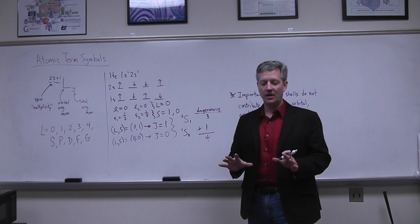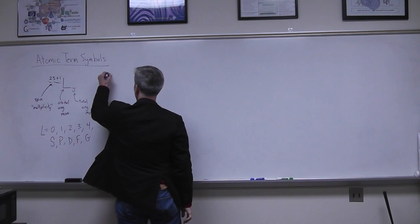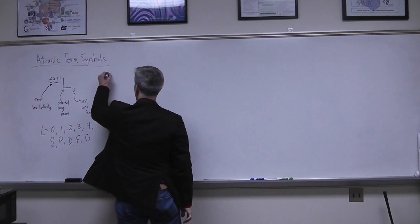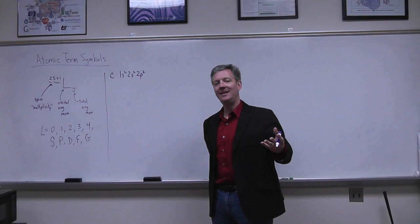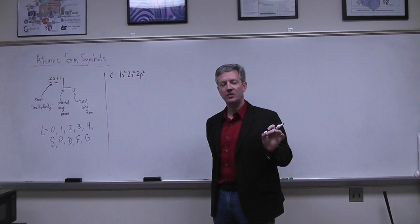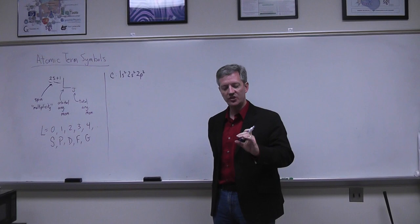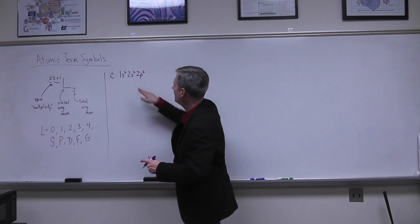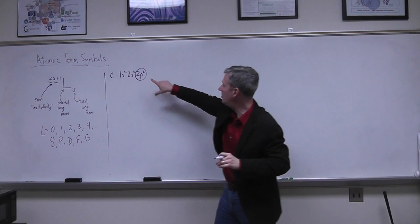Now let's do the carbon atom ground state. Carbon has six electrons with configuration 1s²2s²2p². Since filled shells contribute nothing to angular momentum, the 1s² and 2s² shells are ignored. Everything hinges on the 2p² configuration — I only need to deal with two electrons in the 2p set of orbitals.